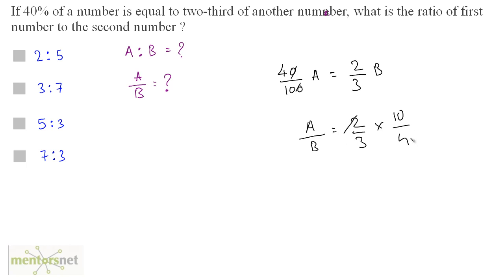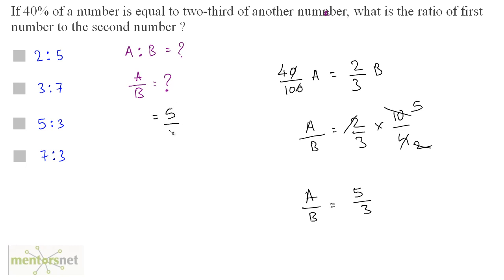Two times two is four, two times five is ten. So a/b equals five by three, meaning the ratio is 5:3. Option D is the correct answer.